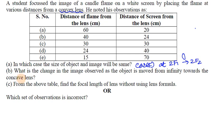Second case: what is the change in the image observed when the object is moved from infinity towards the lens? When the object is at infinity, the image is point-sized. As it moves closer, beyond C the image is still real but diminished.